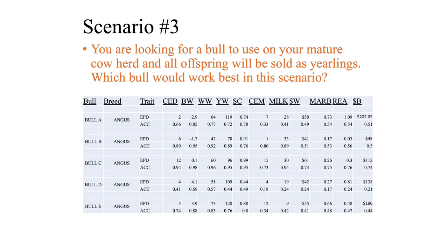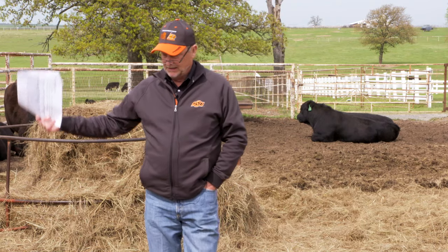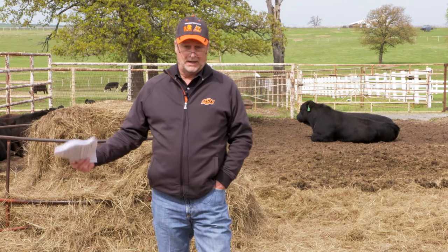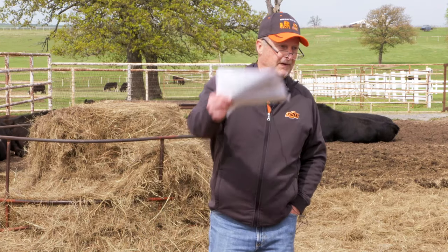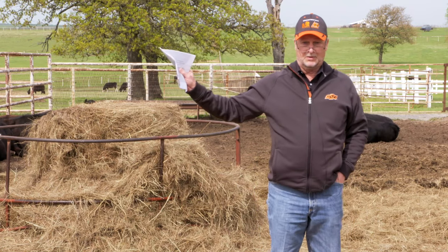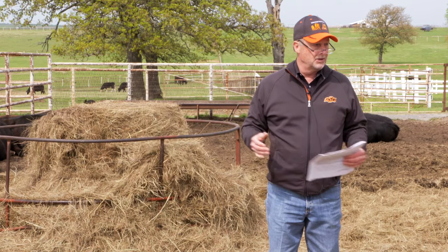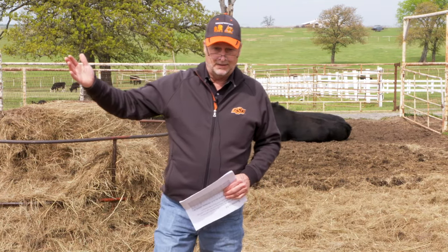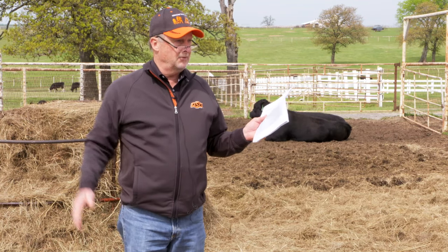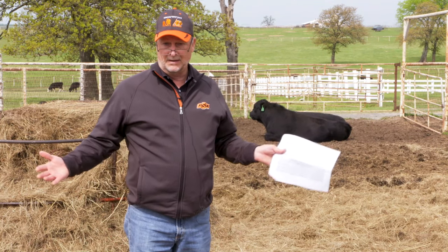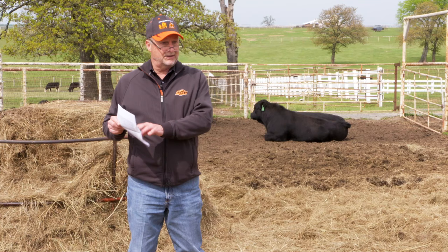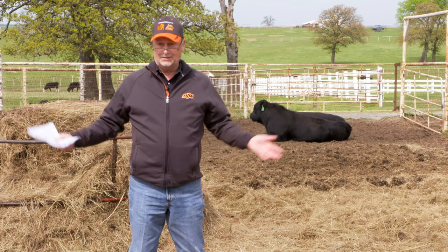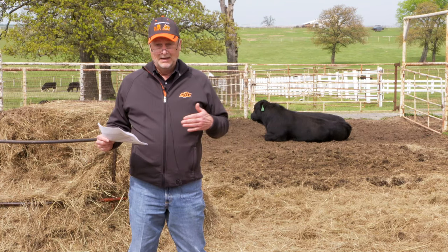Let's look at scenario number three. We're looking for a bull to use on a mature cow herd, and we're going to sell the offspring as yearlings. A common Oklahoma scenario would be spring calving cows — we wean them in October, precondition them for a few weeks, kick them to wheat pasture, and sell them the following spring as yearlings. Since we're not keeping any replacements and selling everything as yearlings, yearling weight is going to be the single economically significant trait to focus on for this scenario.